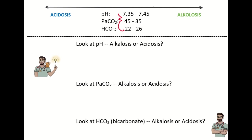The first thing you want to do is write down these normal values: pH 7.35 to 7.45. Anything less than 7.35 is acidotic; anything greater than 7.45 is alkalotic. If a patient has a PaCO2 greater than 45, that's acidotic; less than 35 is alkalotic. For HCO3, less than 22 is acidosis and greater than 26 suggests alkalosis.